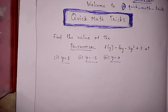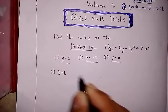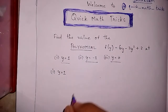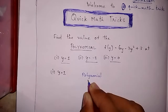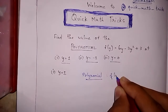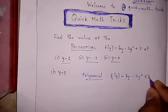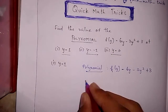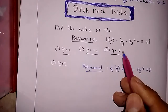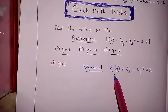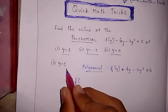First, y is equal to 1, so we apply here. The polynomial is f(y) is equal to 6y minus 3y squared plus 3. Now we are going to apply this y value on this polynomial.